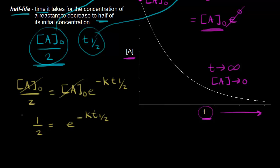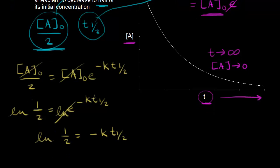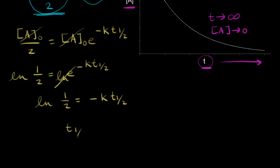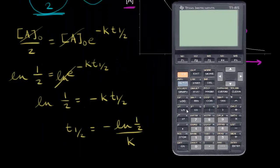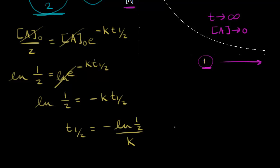We need to get rid of our e, so we can take the natural log of both sides. The natural log of one-half equals the natural log of e to the negative k·t one-half, and that gets rid of our e. So now we have the natural log of one-half is equal to negative k·t one-half. Solving for t one-half, our half-life equals negative natural log of one-half divided by k. The natural log of 0.5 equals negative 0.693, so the negative of that gives us a positive value. Therefore our half-life t one-half equals 0.693 divided by k, where k is our rate constant.